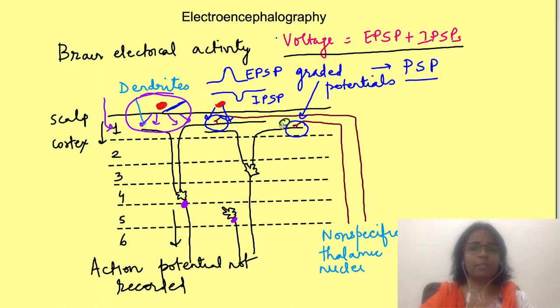If some activity is happening far away from the electrode, the voltage recorded will be less than if the same activity is happening near the electrode.